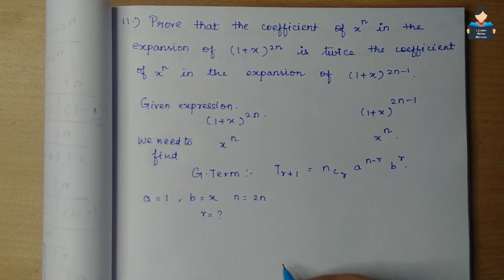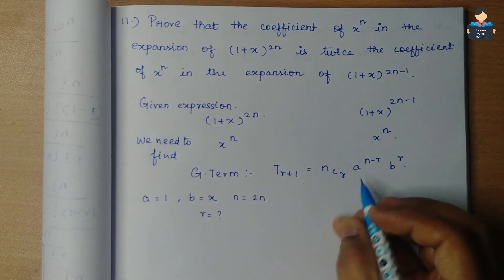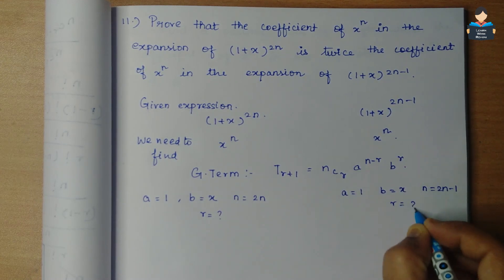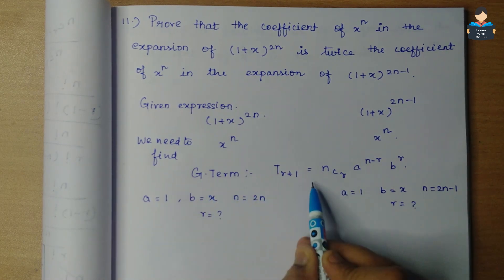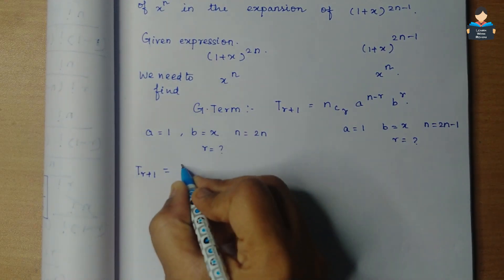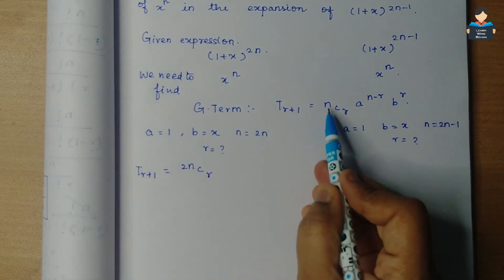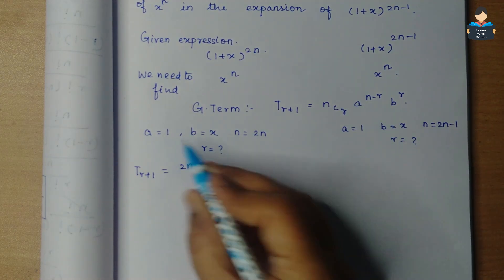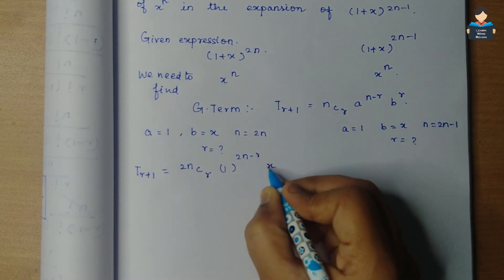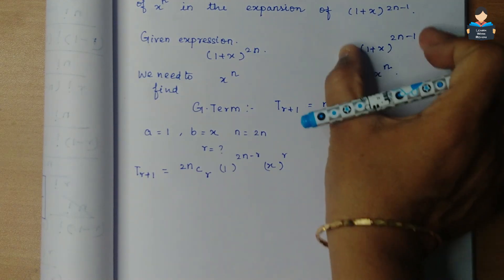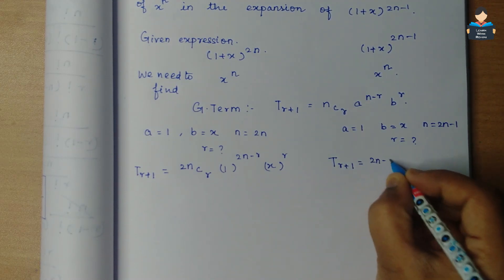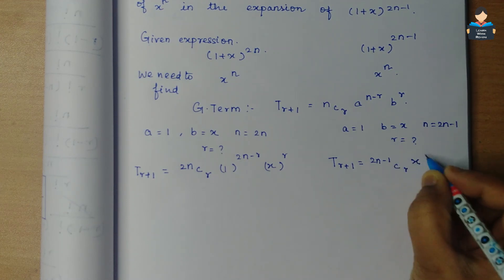For the second expression, a = 1, b = x, and n = 2n-1. Substituting into the general term formula: for the first expansion, T(r+1) = 2nCr * 1^(2n-r) * x^r = 2nCr * x^r. For the second expansion, T(r+1) = (2n-1)Cr * x^r.